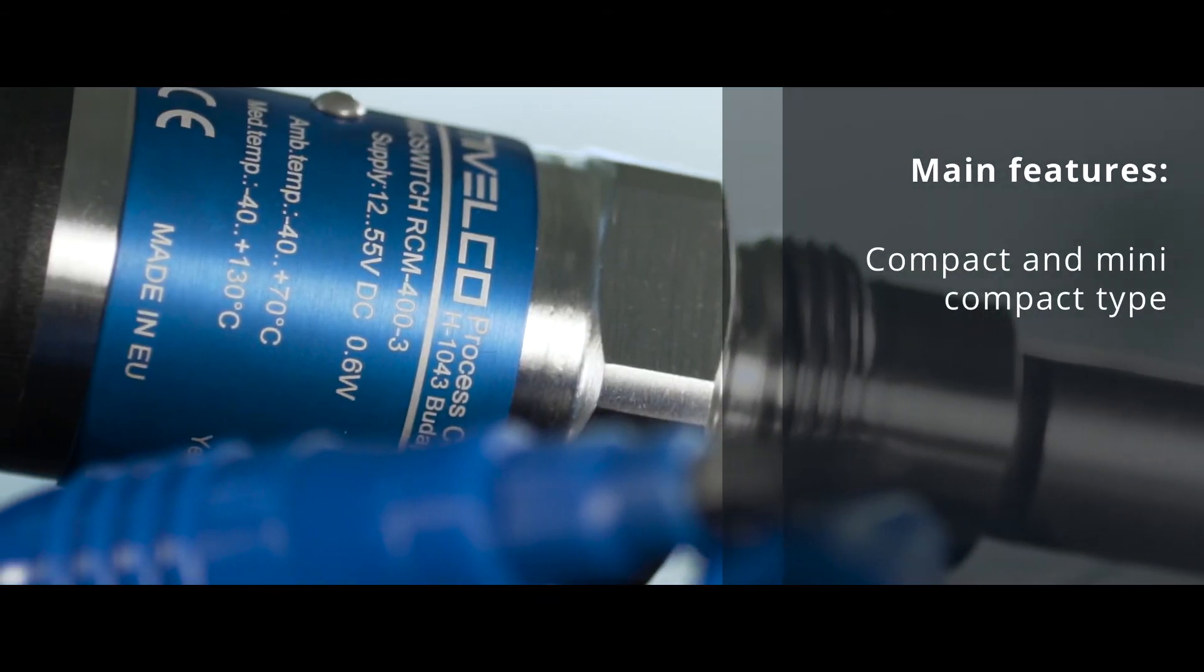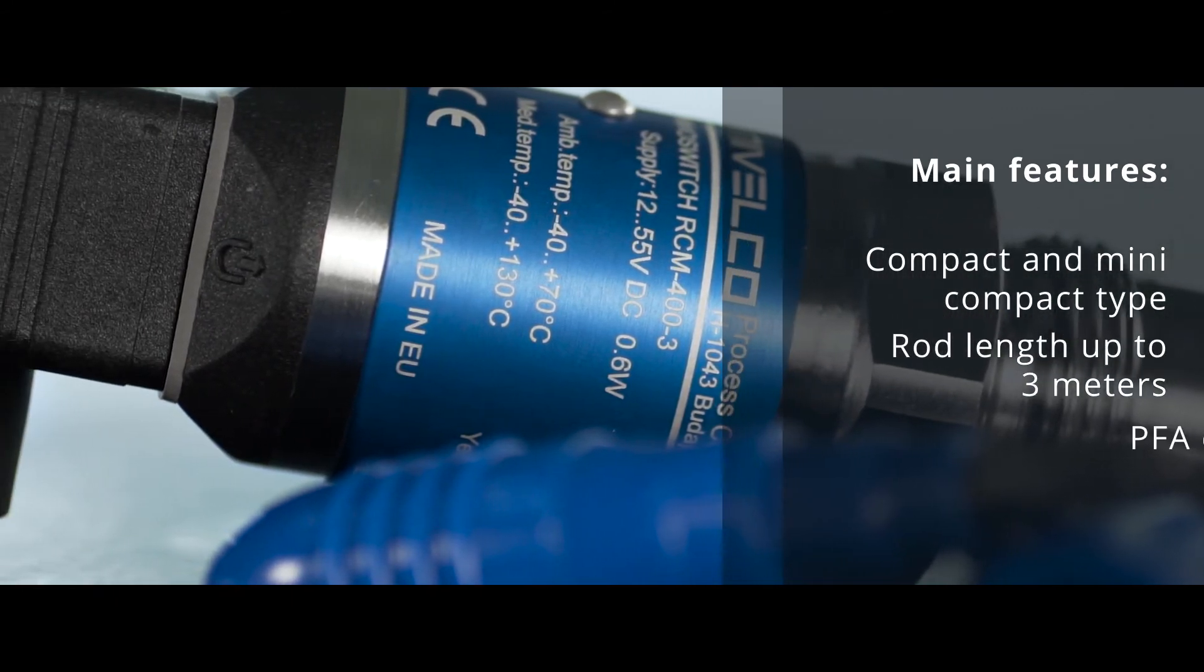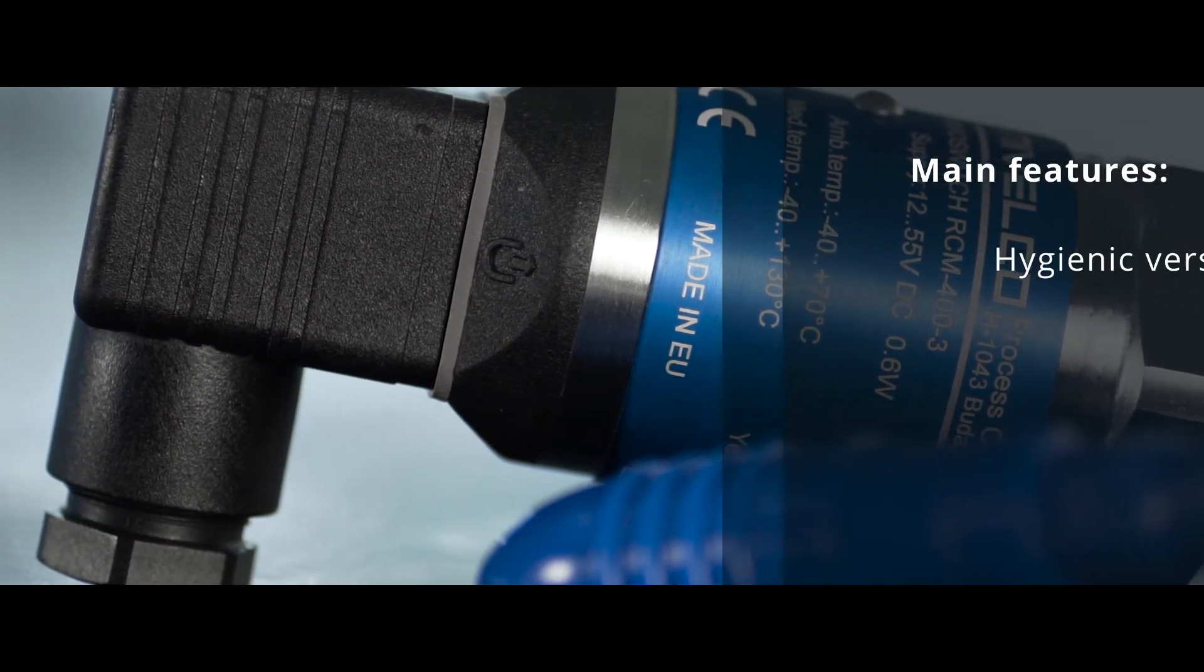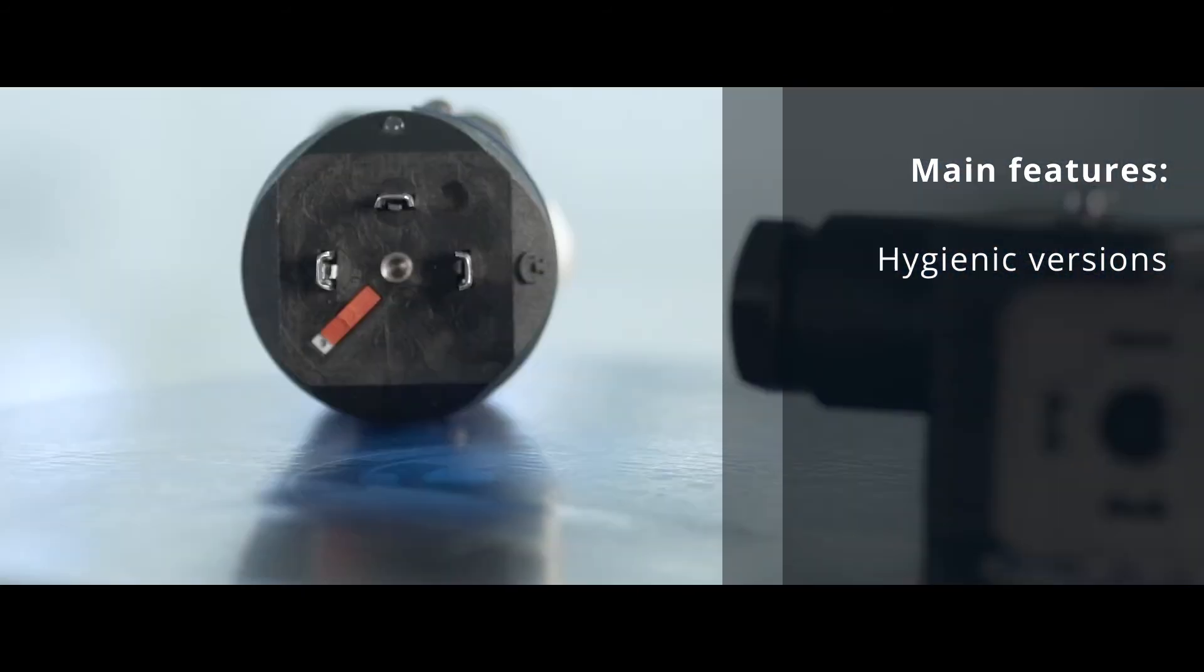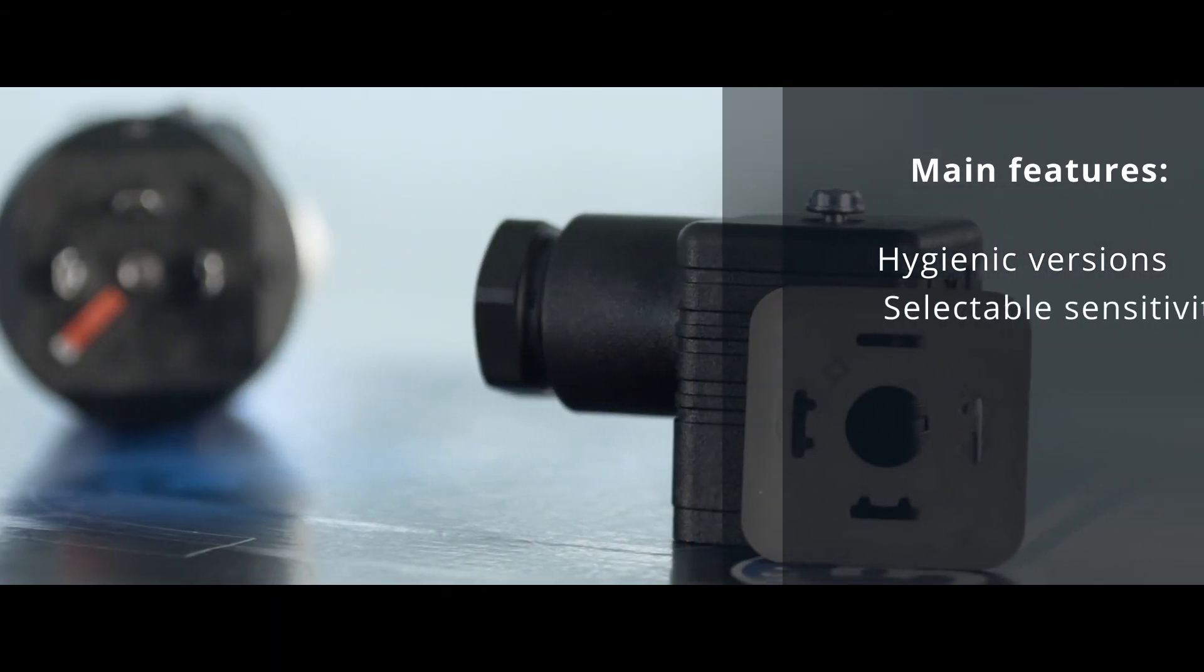The main features of the instrument are the following: Compact and mini compact type, rod extension up to 3 meters, plastic PFA coated version, polished vibrating part, hygienic versions with various process connections and 0.5 micron fine polishing, selectable sensitivity.